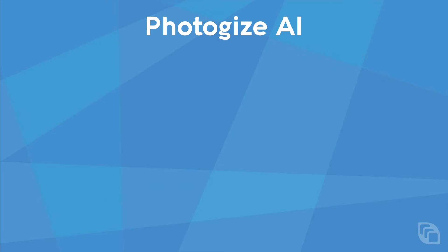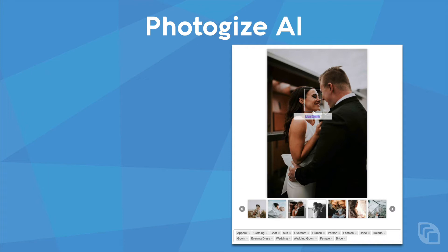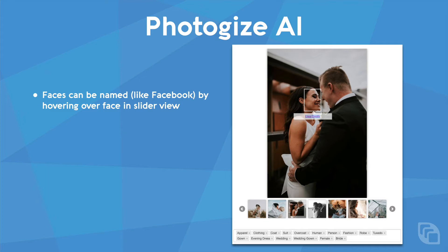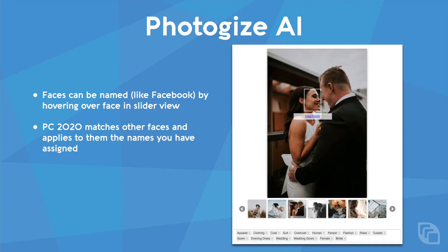One of the coolest new features of PC 2020 is automatic facial and object recognition, powered by Photogize AI. We can now analyze every photo that customers upload to the system, determine what objects are in the scene, and identify all faces. Customers can edit the object names and other important keywords, and can also edit faces in the photos — we will automatically apply those names to matching faces in all their other photos. Customers can then search their gallery for matching faces and objects.